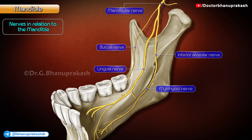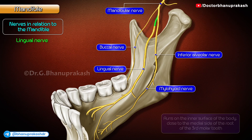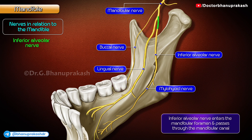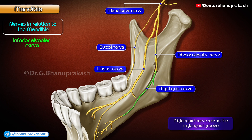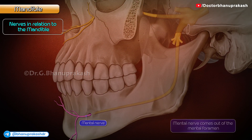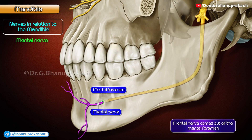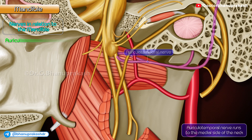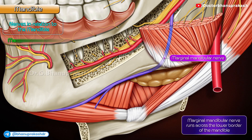Nerves in relation to the mandible are as follows. The lingual nerve runs on the upper surface of the body, close to the medial side of the root of the third molar tooth. The inferior alveolar nerve enters the mandibular foramen and passes through the mandibular canal. The mylohyoid nerve runs in the mylohyoid groove. The mental nerve comes out of the mental foramen. The nerve to the masseter runs through the mandibular notch. The auriculotemporal nerve runs to the medial side of the neck. The marginal mandibular nerve runs across the lower border of the mandible.